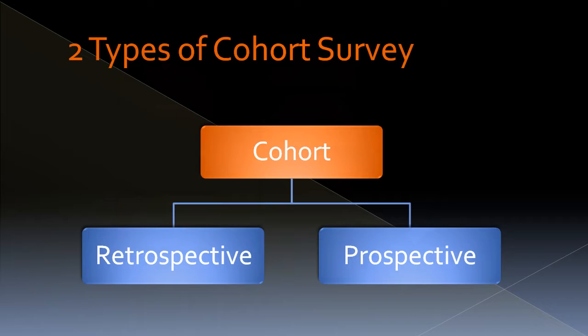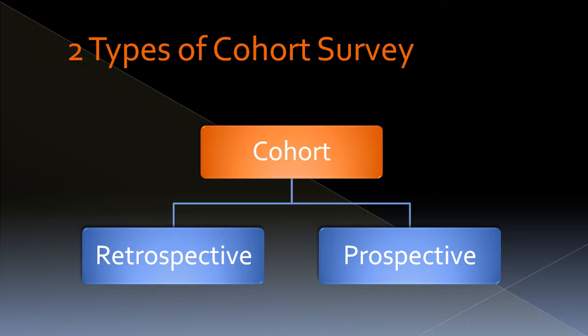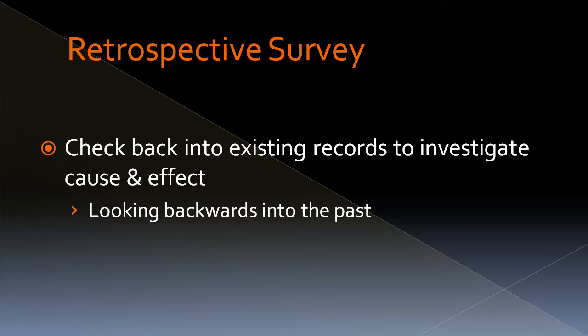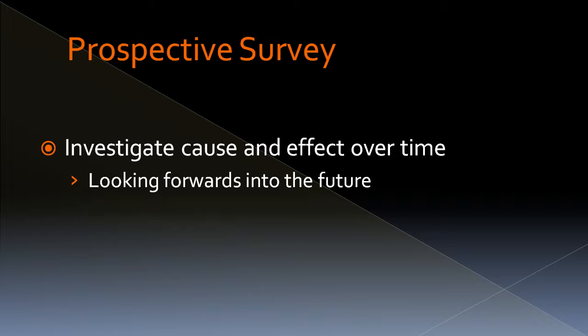There are two types of cohort survey: retrospective and prospective. In a retrospective study, you're checking back into existing records to investigate cause and effect — effectively looking backwards into the past. In a prospective survey, you're investigating cause and effect over time, so you're looking forwards into the future.